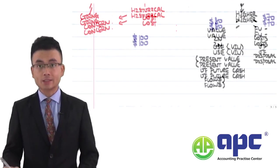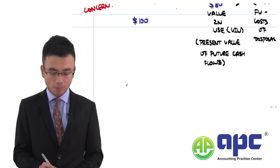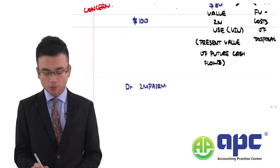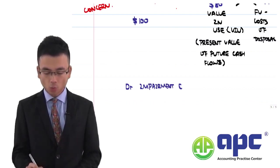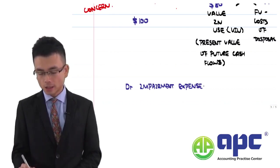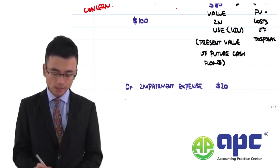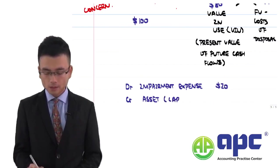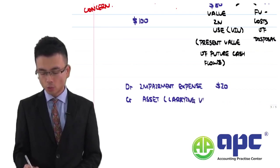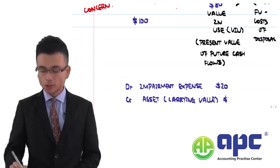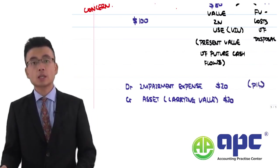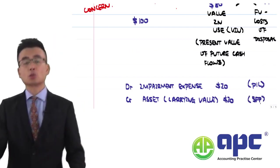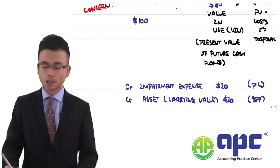With a carrying value of $100 and recoverable amount of $80, the difference is $20. We recognize an impairment loss expense of $20 by debiting the impairment loss in the statement of profit or loss, and crediting the asset at carrying value — reducing it by $20 in the statement of financial position.